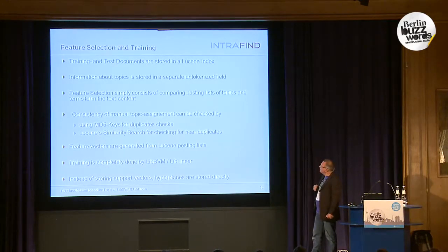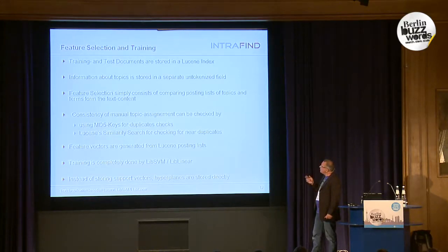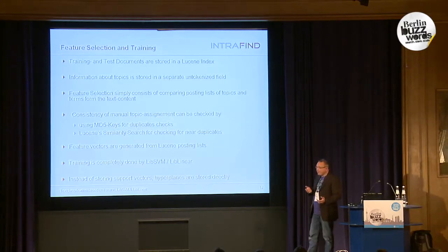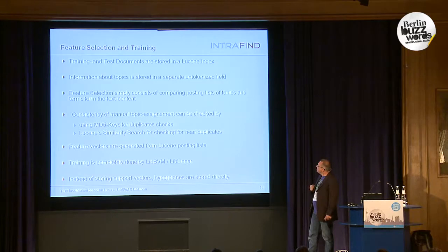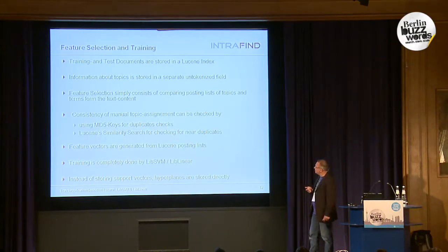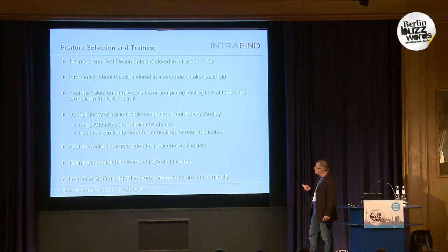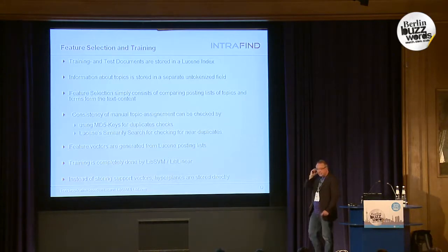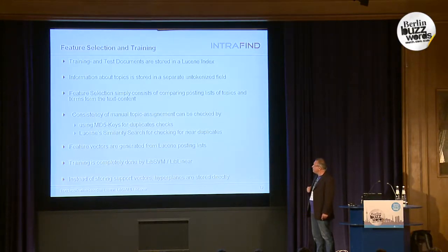Details about the implementation: the training and test documents are stored in the Lucene index. Information about the topic assignments — the topics assigned by experts for training and test documents — is stored in a separate untokenized field. Feature selection simply consists of comparing posting lists of topics and terms in the text content. The consistency of manual topic assignment can be checked using MD5 keys for duplicate checking and Lucene similarity search — more-like-this search — for near-duplicate checking. Feature vectors for support vector machine training can be generated from the Lucene posting lists, and then the training is done entirely by LibSVM or LibLinear.